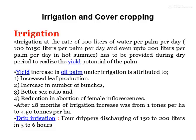Irrigation: water is required at the rate of 100 liters per palm per day, up to 215 liters per palm per day, and even up to 200 liters per palm per day in hot summer. This has to be provided during the dry period to realize the yield potential of the palm. Increasing irrigation increases leaf production, number of bunches, better sex ratio, and reduces abortion of female flowers. After 28 months, yield increased from 1 ton per hectare to 4.50 tons per hectare.